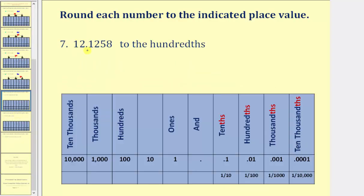Here we want to round 12.1258 to the hundredths place value. Using our formal rules, let's first identify the hundredths place value, which is the two. The digit to the right of this two is the decision maker — if it's five or more we round up, if it's four or less we round down. Because it's five, we round up and change the two to a three, which means the given value rounds to 12.13 to the hundredths place value.